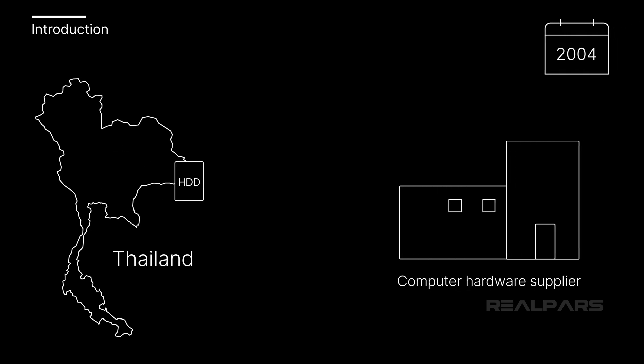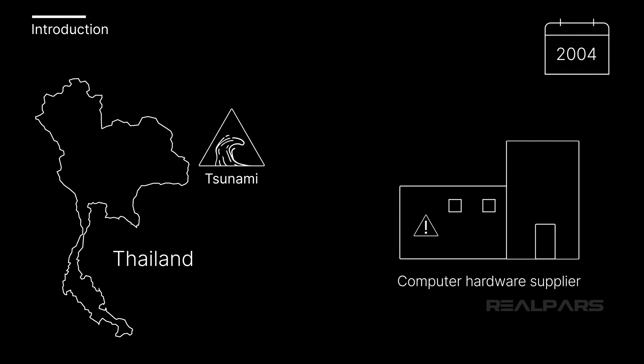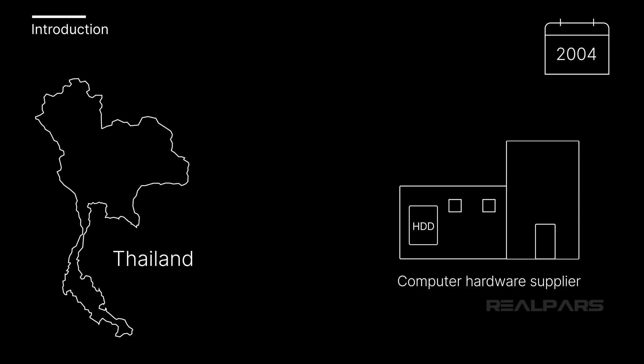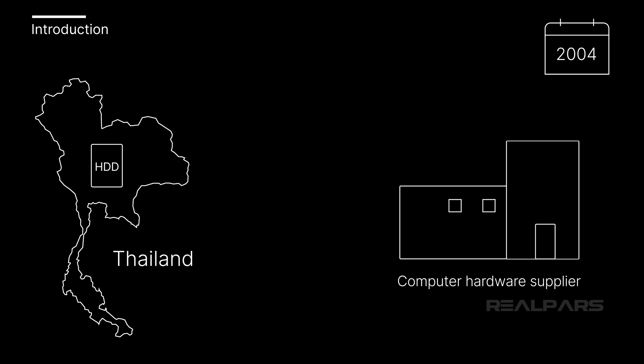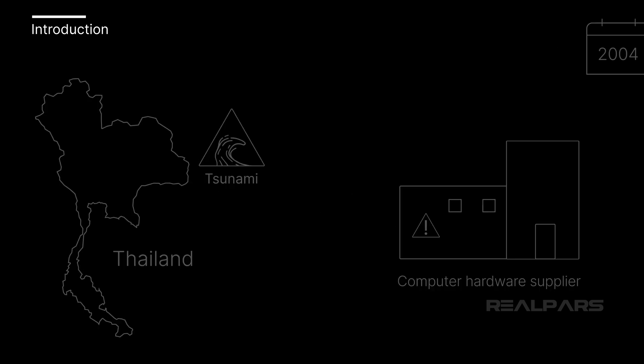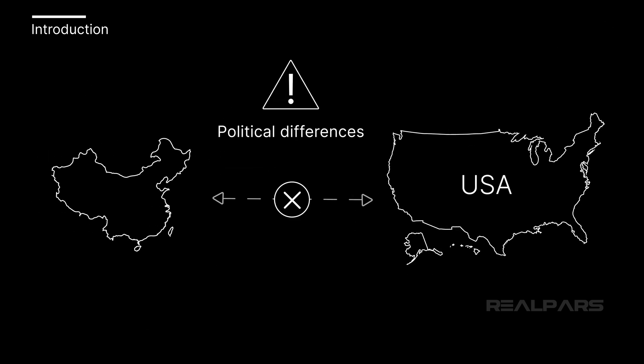For example, in 2004, a tsunami that affected Thailand caused an interruption in the supply of hard disk drives that severely affected some computer hardware suppliers. Recently, political differences have led some countries to add steep tariffs to these products or choose not to supply them at all.